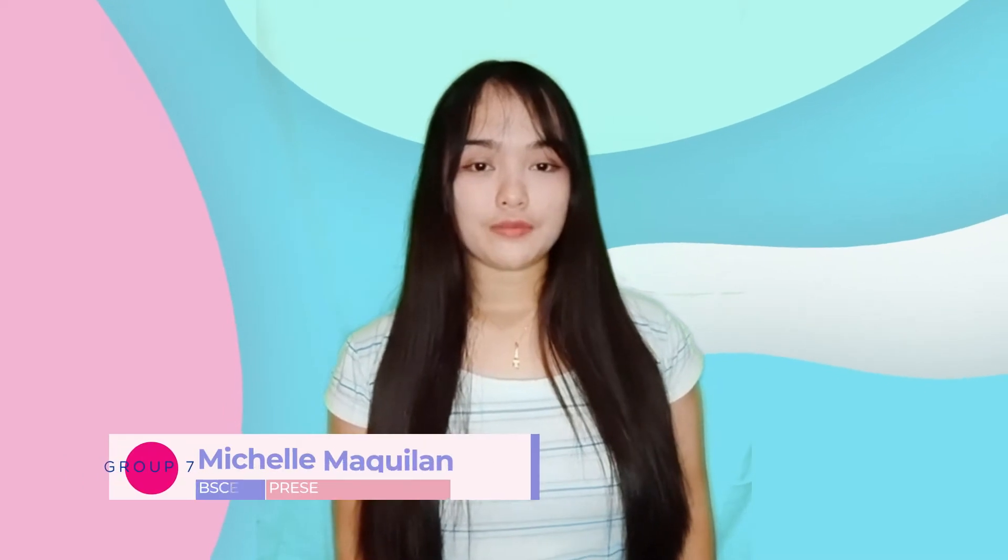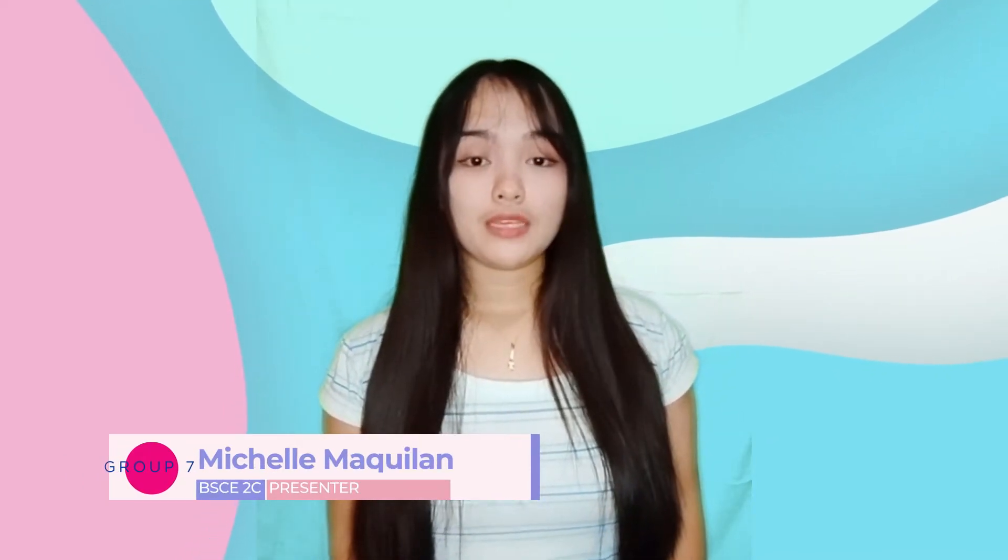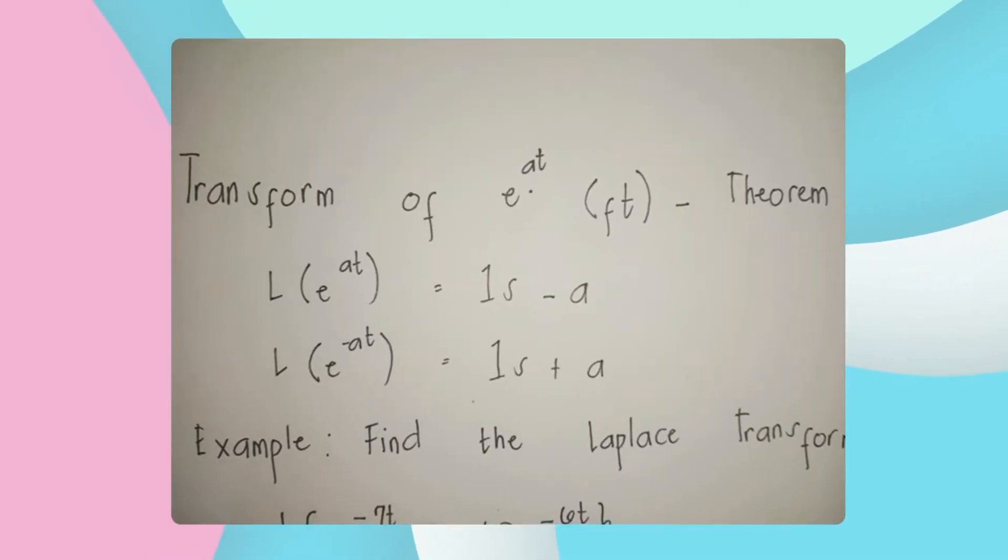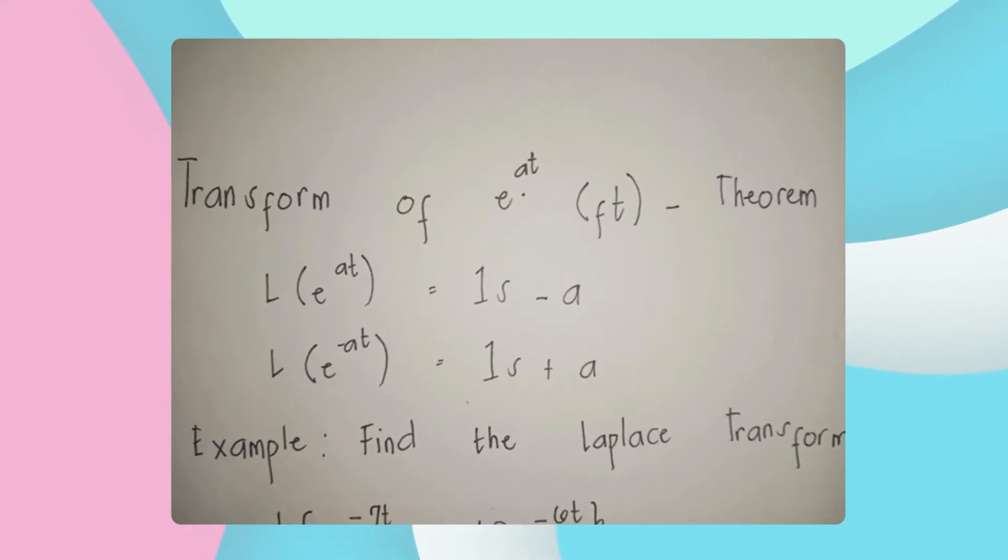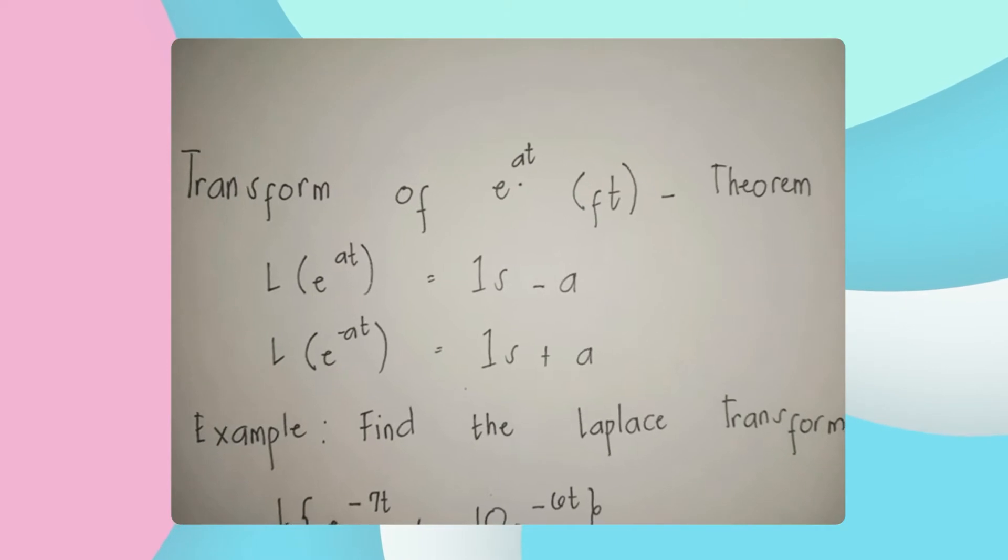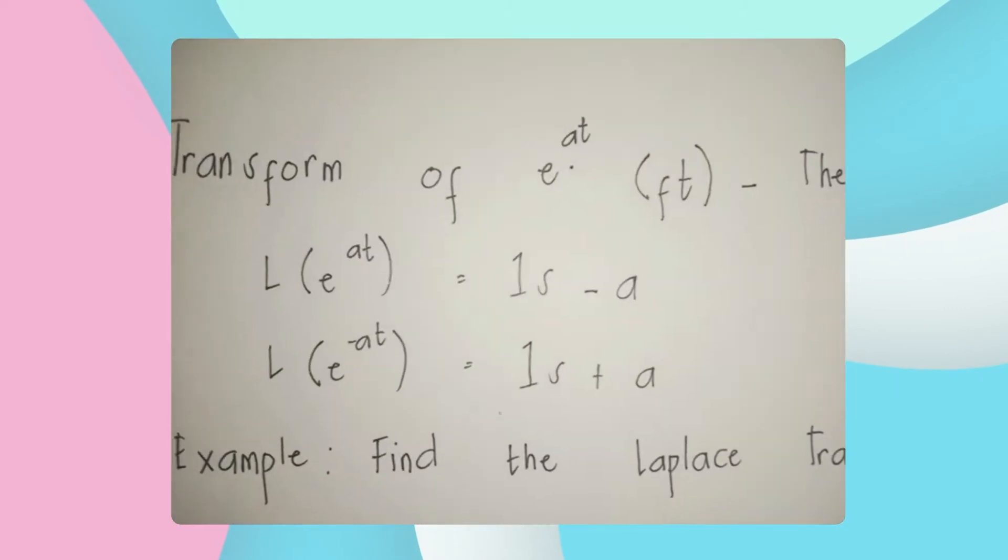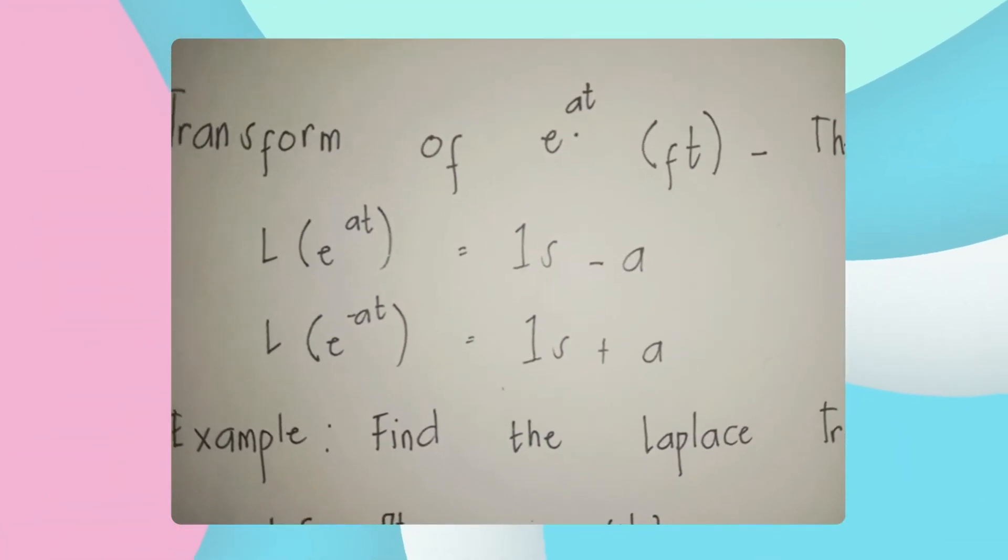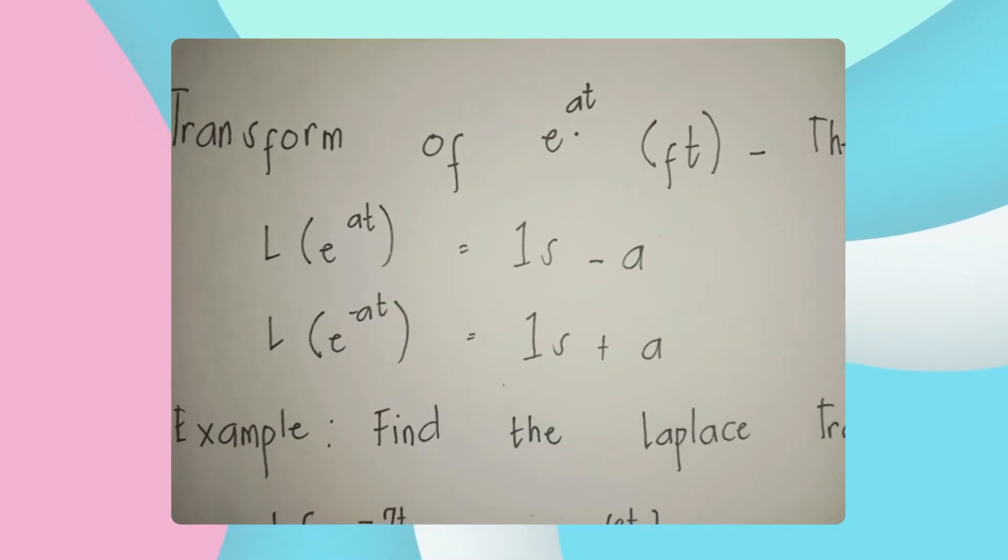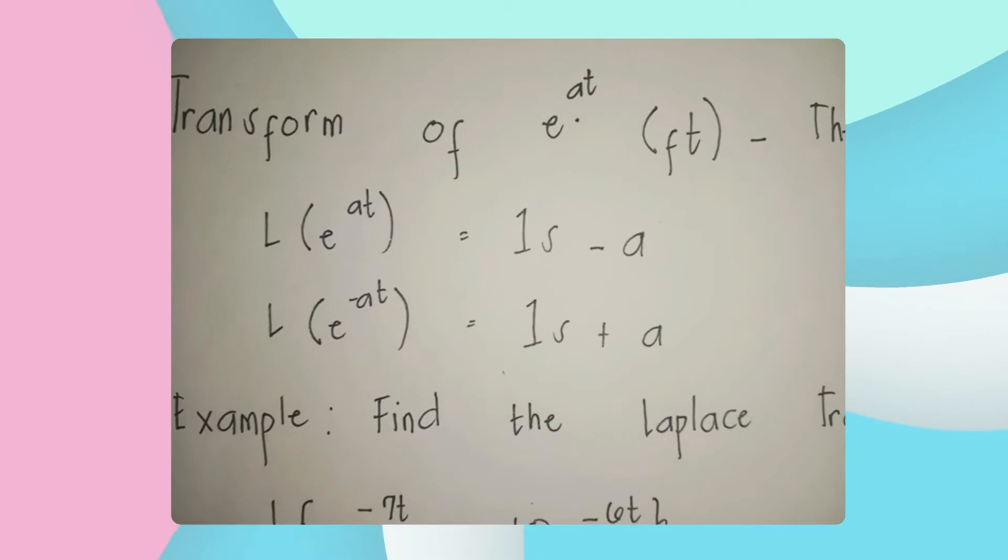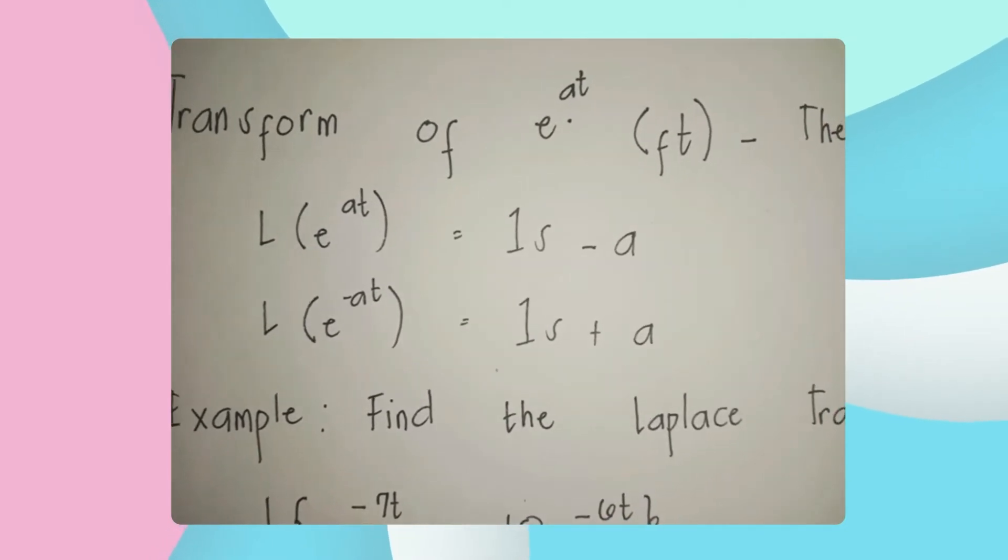Hello everyone, I am Michelle. I am going to talk about the Laplace transform of functions, specifically on the transform of e raised to the power of at theorem. To give us a clear understanding about this topic, I am going to give you some examples. The formula for the Laplace transform of e raised to the power of at theorem are as follows: Laplace transform of e raised to the power of positive at is equal to 1 over s minus a. The second one is Laplace transform of e raised to the power of negative at is equal to 1 over s plus a.